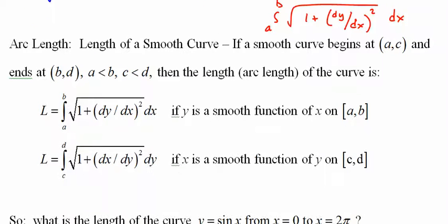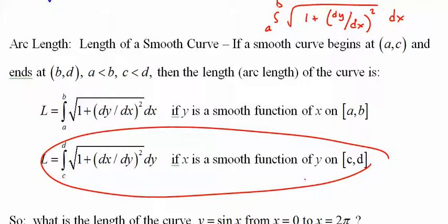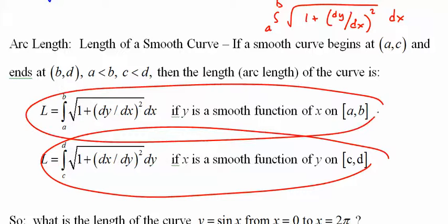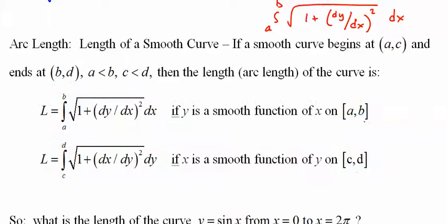So there they are, the length of a smooth curve. What's smooth? We'll come back to that. From a at (a, c) and ends at (b, d), where a is less than b, c is less than d. What's with all the letters? Well, because we can do it with respect to the y, and we can do it with respect to the x. So we have to have a couple of different intervals for that.